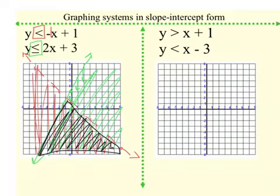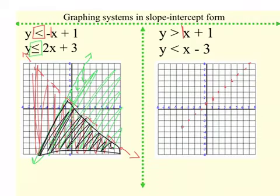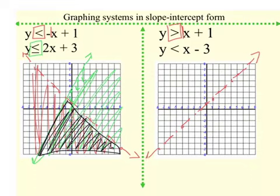For the next example, we're going to begin at positive 1. This is a positive slope, so I'm going to go up 1 over 1, doing this throughout the entire grid line and going the opposite direction as well — down 1 and to the left 1. My symbol here tells me it's a greater than, so since it doesn't have the equal to, it's going to be a dotted line. And greater than tells me to shade up, so I'm going to shade everything on this side.